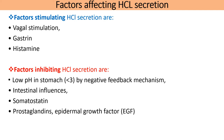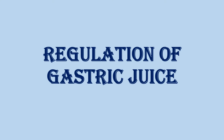Factors that stimulate HCl secretion are vagal stimulation, gastrin hormone, and histamine. Factors that inhibit HCl secretion include: low gastric pH — when pH falls below 3, negative feedback stops HCl secretion; intestinal influences via hormones such as secretin and cholecystokinin; secretion of somatostatin; and secretion of prostaglandins and growth factors such as epidermal growth factor.